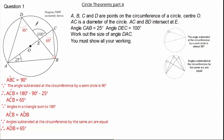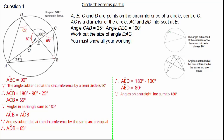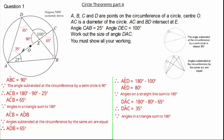Now let's see if we can use this 100 degrees. We can work out angle AED: 180 subtract our 100 gives us an angle of 80 degrees. This is because angles on a straight line sum to 180 degrees. Now we can finally work out angle DAC: 180 subtract our 80 subtract our 65 gives us a final answer of 35 degrees. This is because angles in a triangle sum to 180 degrees.